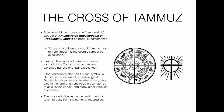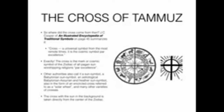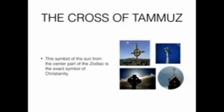J.C. Cooper's Illustrated Encyclopedia of Traditional Symbols, page 45, summarizes: 'Cross — a universal symbol from the most remote times; it is the cosmic symbol par excellence.' The cross is the mark or cosmic symbol of the zodiac of all pagan sun-worshiping religions. Other authorities also call it a sun symbol, a Babylonian sun symbol, an astrological symbol of the Babylonians, Assyrians, and other heathen — also in the form of an encircled cross referred to as a solar wheel. The cross with the sun in the background is taken directly from the center of the zodiac, and we see this on many steeples and churches today.